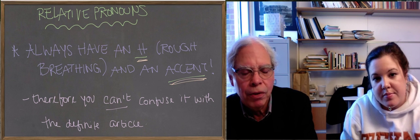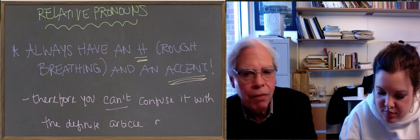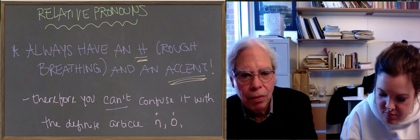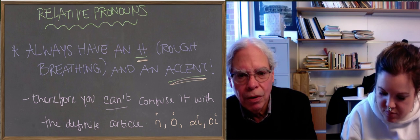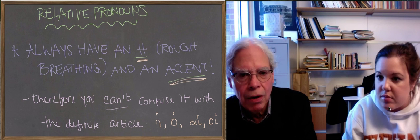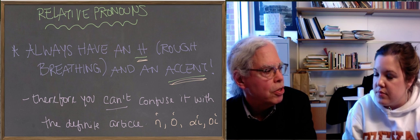So in the article, for example, when you have an H as in ha and he and hoi and hai, you never have an accent. And so the other forms of the relative pronoun, the other forms of the article all have a T and this word always has an H.